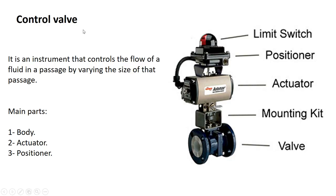Basically, a control valve is an instrument used in factories or plants. It is an instrument that controls the flow of a fluid in a passage, done by varying the size of that passage. The main parts are the body, actuator, and positioner.